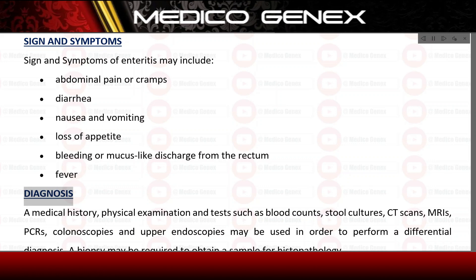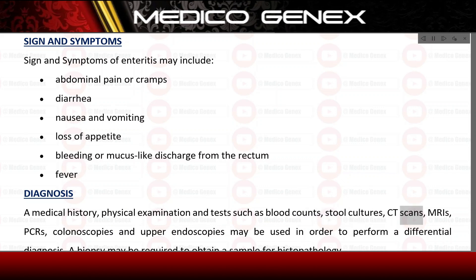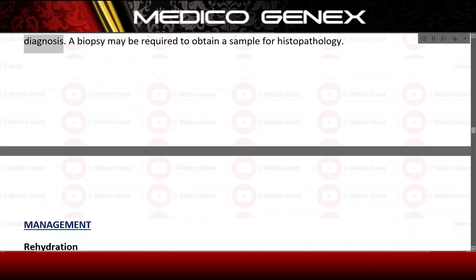Diagnosis. A medical history, physical examination, and tests such as blood counts, stool cultures, CT scans, MRIs, PCRs, colonoscopies, and upper endoscopies may be used in order to perform a differential diagnosis. A biopsy may be required to obtain a sample for histopathology.